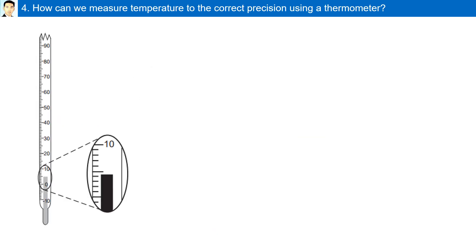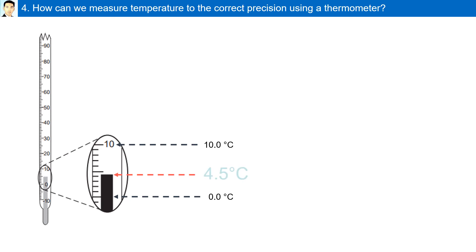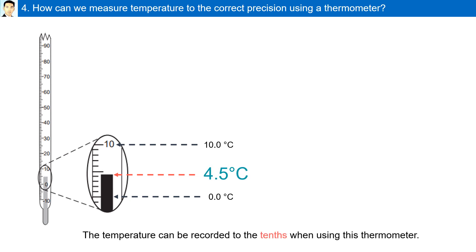And finally, how can we measure temperature to the correct precision using a thermometer? Looking at the graduations on the thermometer, we can see they go up by increments of 1. The temperature is between 4 and 5 degrees Celsius. We can estimate one beyond 4 degrees Celsius and report it as 4.5 degrees Celsius. The temperature can be recorded to the tenth place when using this thermometer.